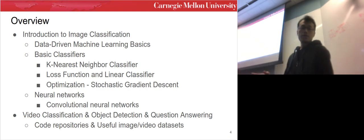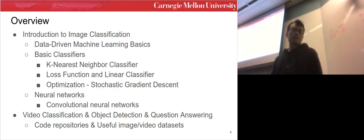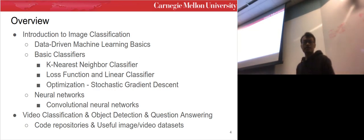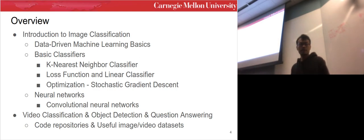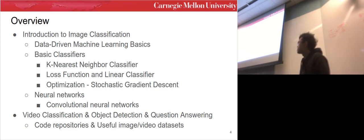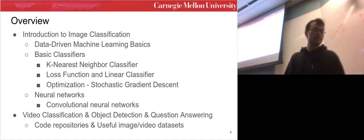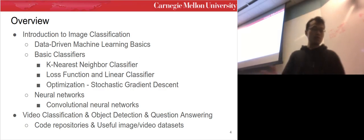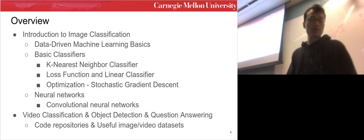A little bit about me: I'm a PhD student in computer science and my research area is computer vision and multimedia processing. Alex is my advisor. I've done projects in object detection and tracking, activity detection in videos, activity future prediction, weakly supervised learning, question answering, shooter localization, and 3D event reconstruction. The overview of today's lecture covers data-driven machine learning basics, classifiers, loss functions, neural networks, CNNs, and interesting computer vision tasks.